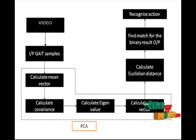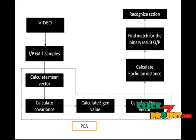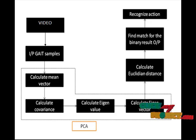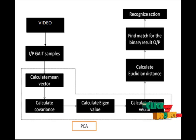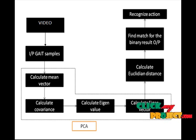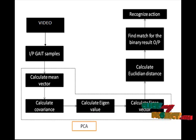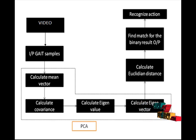This is the flow diagram of the project. Human gait is the way motion is achieved using human limbs. Human gait is defined as bipedal, biphasic, forward propulsion of the center of gravity of the human body, in which there are alternate synchronous movements of different segments of the body with least expenditure of energy. Different gaits are characterized by differences in limb movement patterns, overall velocity, forces, kinetic and potential energy cycles, and changes in contact with the surface.